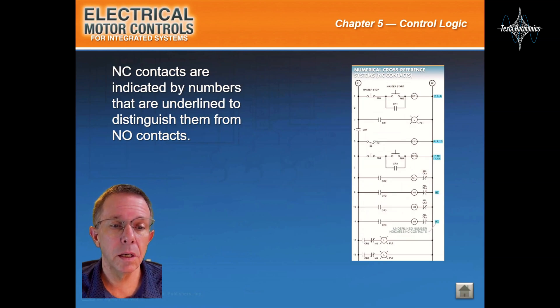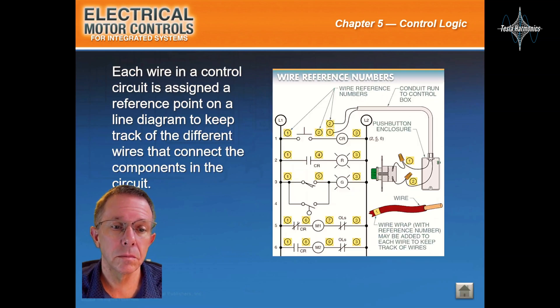Normally open contacts are indicated by numbers that are underlined to distinguish them from normally open contacts. Each wire in a control circuit is assigned a reference point on a line diagram to keep track of the different wires that connect the components in the circuit.